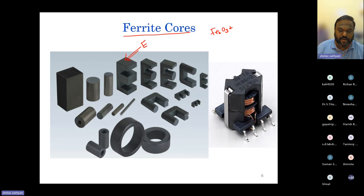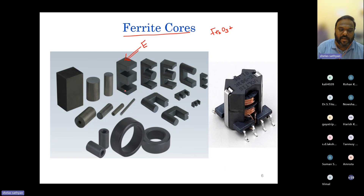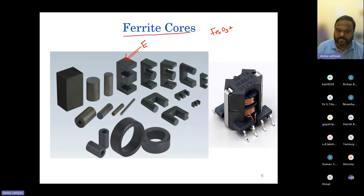Once the ferrite core is cast, it is quite brittle and you cannot alter its shape. If you apply force, there is a high chance it may break, and once broken it cannot be repaired. You should be extremely careful not to apply mechanical forces that could damage it — even if you glue a broken ferrite core, its magnetic property will be reduced because of the large air gap caused by the gluing. Two E-cores form a complete magnetic path.